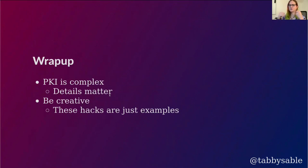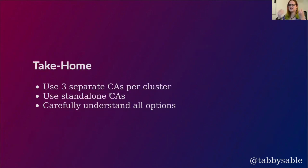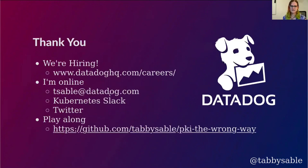To wrap this up — PKI is really complex. The configuration is complex; there are many different command line options, but all of those details matter. In nearly every case, if you misconfigure something, it creates some kind of opportunity to do something inappropriate. You need to look at it creatively because these particular hacks are just fun examples. There are certainly other ways in which PKI misconfigurations could be exploited in Kubernetes. The take-home message is: use three separate certifying authorities per cluster and make them standalone. If you're unable to follow those rules, be very careful that you understand every option you're choosing.